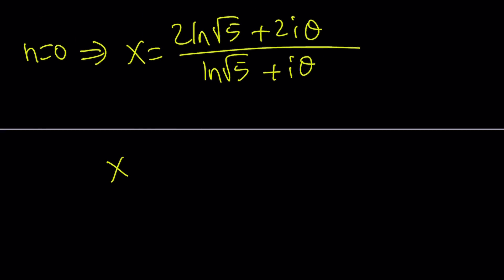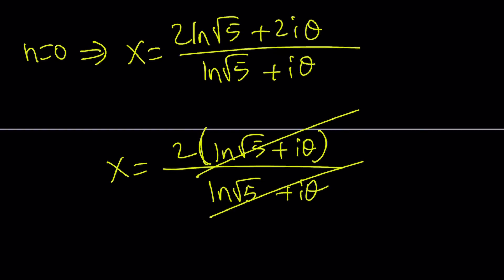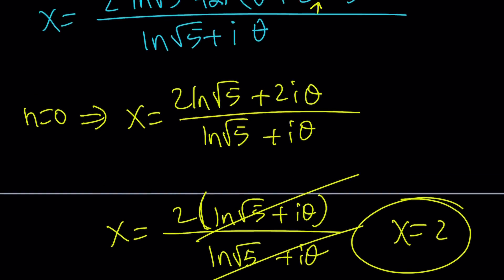If n=0, we're going to get rid of the 2nπ. So x is going to be (2ln√5 + 2iθ)/(ln√5 + iθ). But guess what? If you take out a 2, factor out the 2, ln√5 + iθ is going to cancel out, leaving us with the 2, which is the very first solution that we found. But this is the general solution. And this brings us to the end of this video.